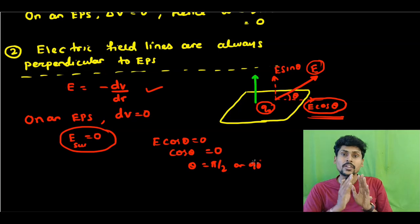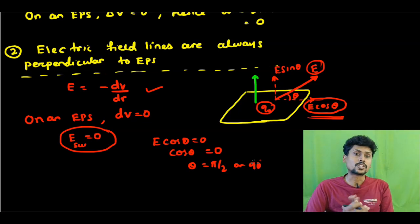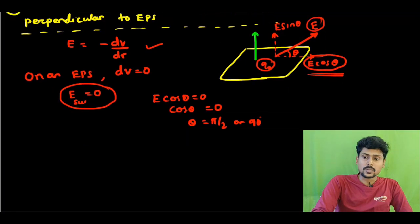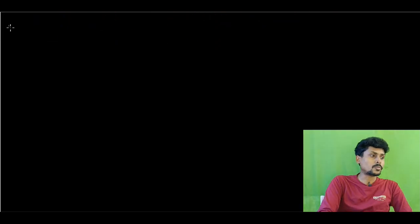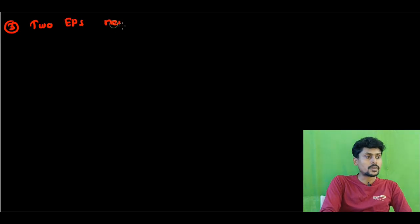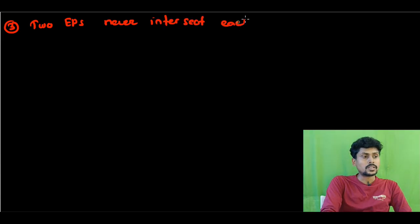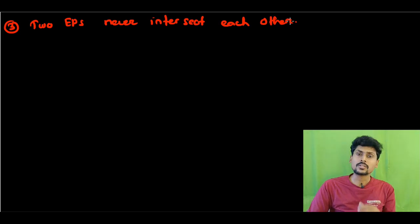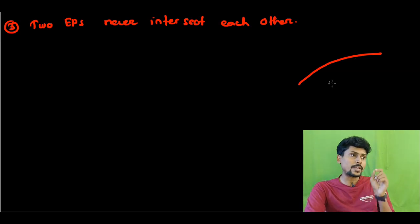That is why, remember that electric field lines are always perpendicular to the surface of an EPS. This is the second property. Now we will discuss about the third property.